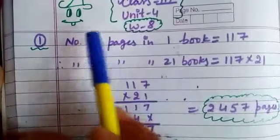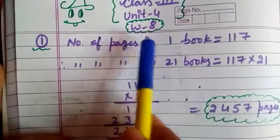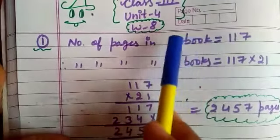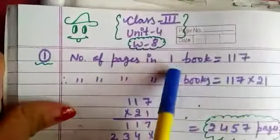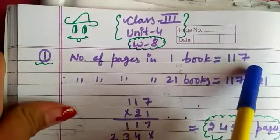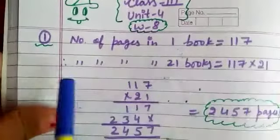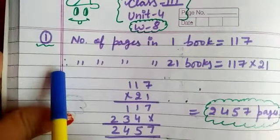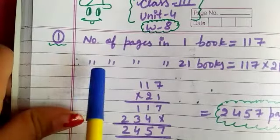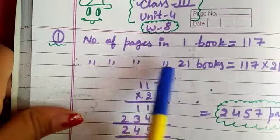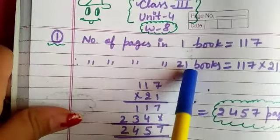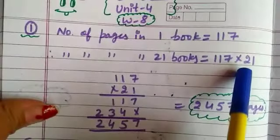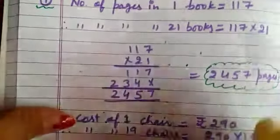Number of pages in one book equal to 117. Right? Therefore, number of pages in 21 books equal to 117 multiplied by 21. We will multiply.